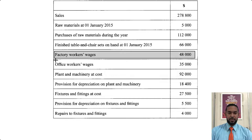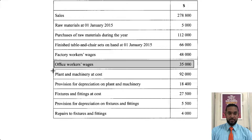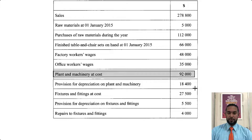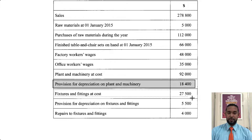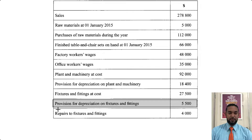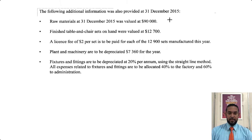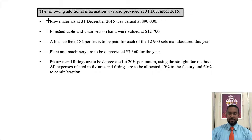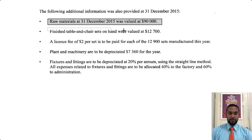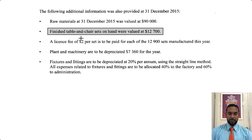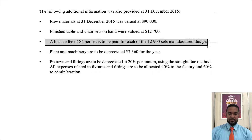We have factory workers' wages, office workers' wages, plant and machinery at cost, provision for depreciation on plant and machinery, fixtures and fittings at cost and the associated provision for depreciation, and repairs to fixtures and fittings. The following additional information was also provided at 31st December 2015: we have closing stock of raw materials, closing stock of finished goods, and a license fee of $2 per set to be paid for each of the 12,900 sets manufactured — so that's a direct expense.